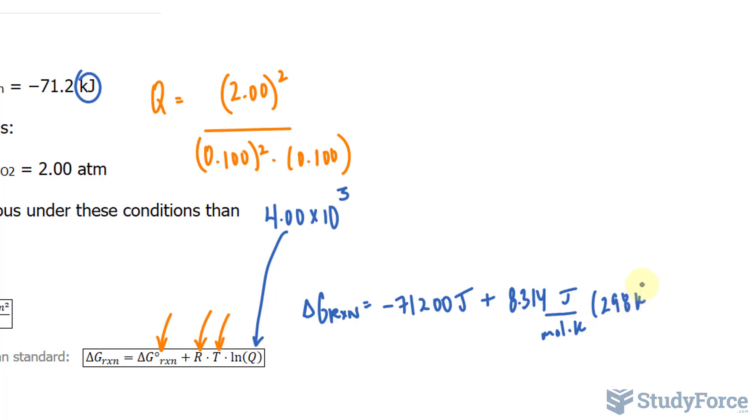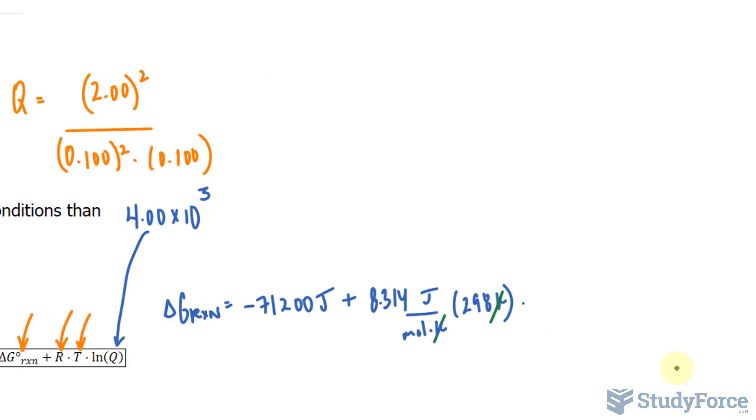This conveniently cancels out the Kelvin unit, times ln of this unitless number, ln of 4,000.